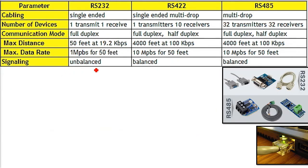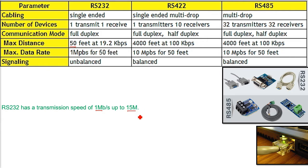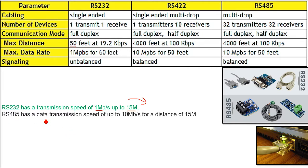RS-232 has a transmission speed of 1 Mbps up to 15 meters (50 feet), and beyond that it drops to 19.2 kbps. When you use RS-485, data transmission is 10 Mbps for 50 feet (15 meters). Beyond that, it can go up to 4000 feet, which is around 1200 meters, at 100 kbps — which is way higher than 19.2 kbps.